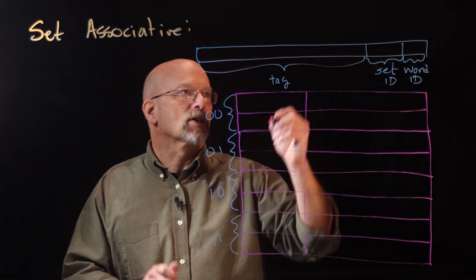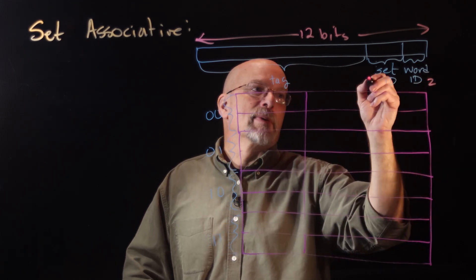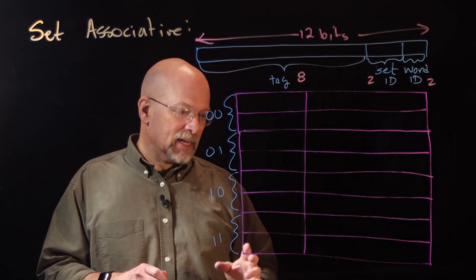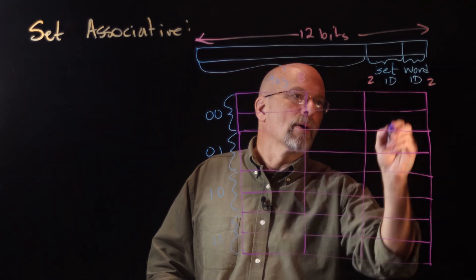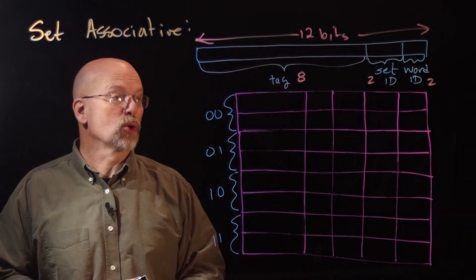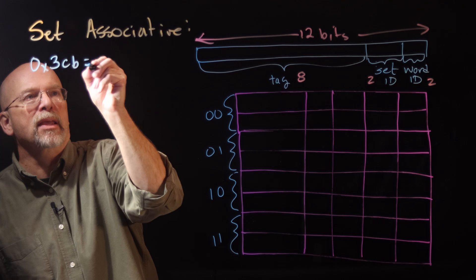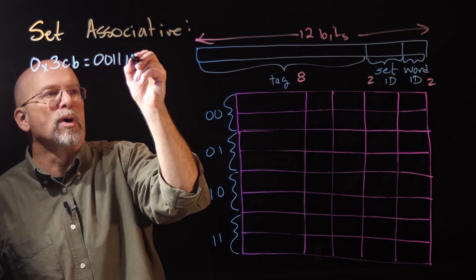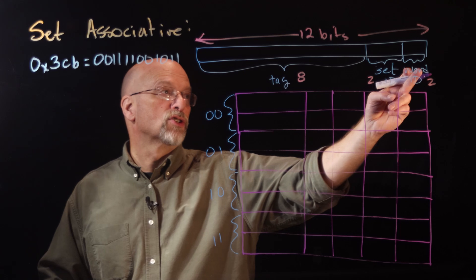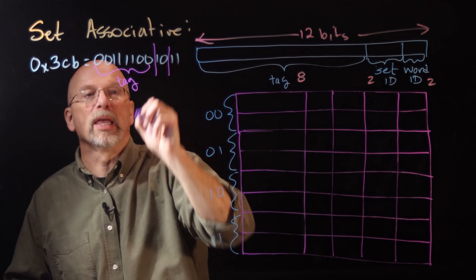Let's go back to a 12-bit full address. We'll still have two bits for the word ID. For the set ID, we'll have two bits, which leaves eight bits for the tag — one more bit for the tag compared to direct mapping. Now we set up our block patterns. The address is partitioned into word ID bits, set ID bits, and then the tag.